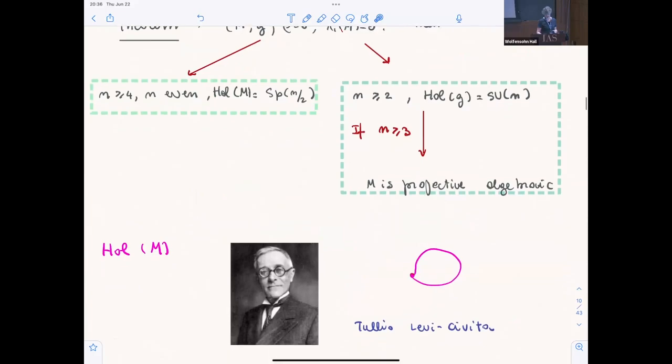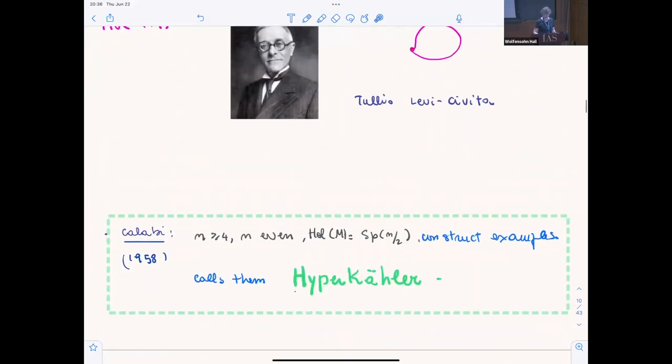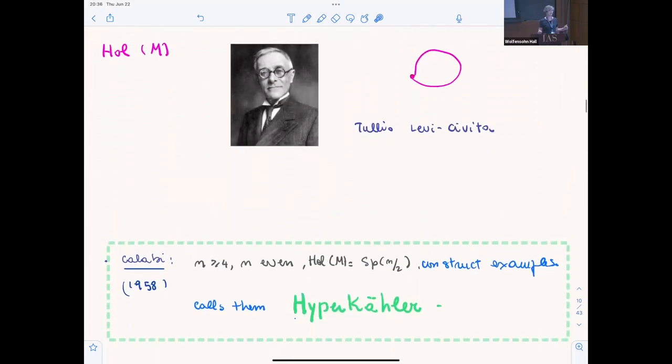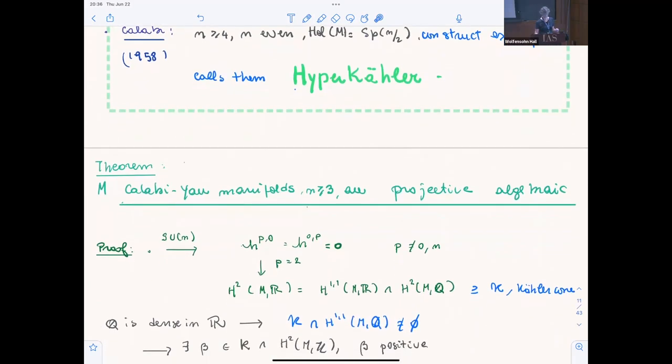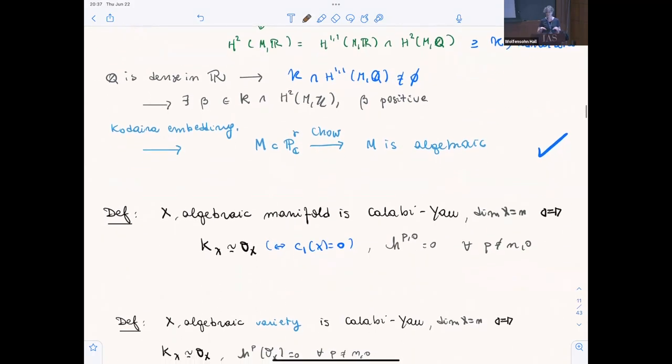There is a theorem from holonomy classification of the holonomy group. Essentially, for simply connected ones, there are two types. The ones on the left have holonomy SP, a symplectic group, and the other is holonomy SU(n). The claim is the ones that have holonomy SU(n) are projective algebraic. For the first one, Calabi named them hyperkähler and gave some examples.